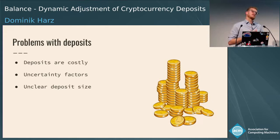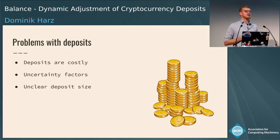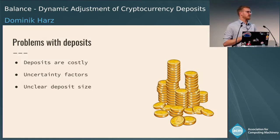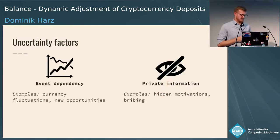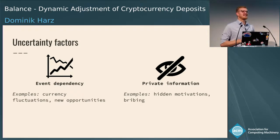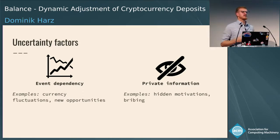There's also uncertainty about the amount of deposits you actually need, due to two factors. When you pay a deposit at the beginning of the protocol, we need to account for event dependency — almost everyone has heard about the big price fluctuations in the cryptocurrency world — and we need to account for these price fluctuations while the deposit is still there. On the other hand, Alice might have private information: for example, she may be invested in a competitor protocol and not care about losing her deposit.